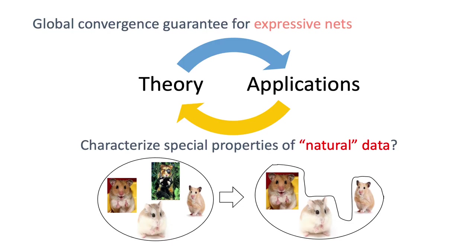In summary, in this work, we provide a global convergence guarantee for neural networks that are expressive enough to interpolate training data. So we have a good algorithm inspired by theory.